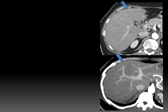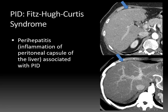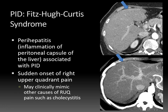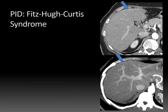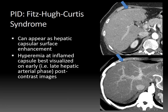If the hepatic veins are enhancing, we've missed this phase and are more in the portal venous phase. This is a patient with Fitzhugh-Curtis syndrome, a perihepatitis — inflammation of the peritoneal capsule of the liver associated with pelvic inflammatory disease. It causes sudden onset of right upper quadrant pain that can mimic cholecystitis or even right lower lobe pneumonia if there's associated pleurisy. This appears as hepatic capsular surface enhancement, best seen in the late hepatic arterial phase.